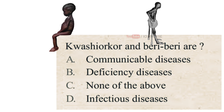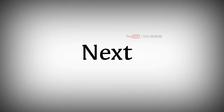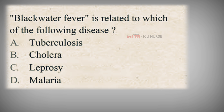Kwashiorkor and Beriberi are? A. Communicable diseases, B. Deficiency diseases, C. None of the above, D. Infectious diseases. The correct answer is B. Deficiency diseases. Diseases caused by the lack of an element in the diet, usually a particular vitamin or mineral, are called deficiency diseases.